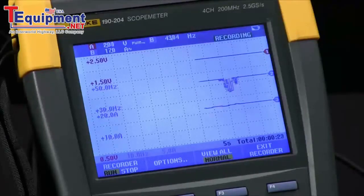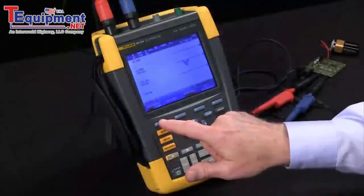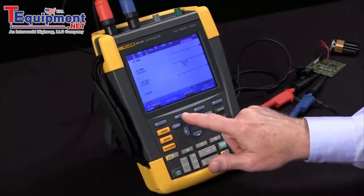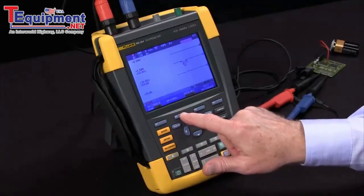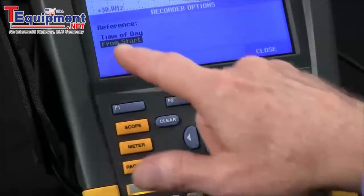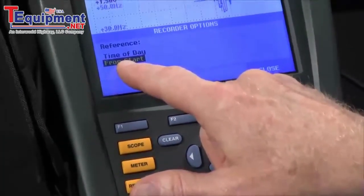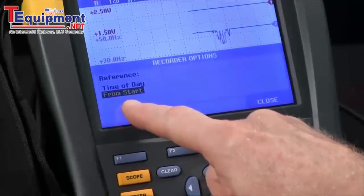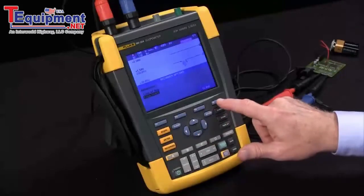When you're ready to stop, you hit F1 to stop the recording. You've got options that you can set up which are good to look at as far as how you record the data, time of day or from the start. So you can have elapsed time or the actual time to come back and review the data.